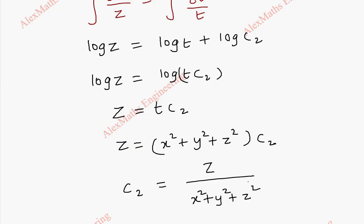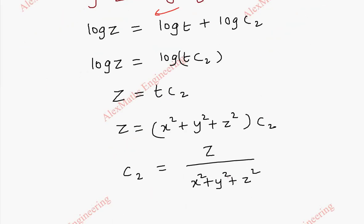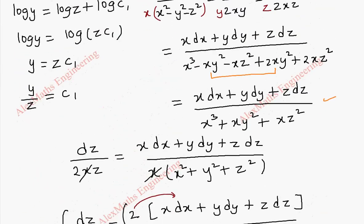Even we can get the answer reciprocal of this by interchanging these two terms. When this is here and this is here, finally c2 will be reciprocal of this. But whatever form, all are equally valid and all are correct answers. So we got c2, and we have c1 also.